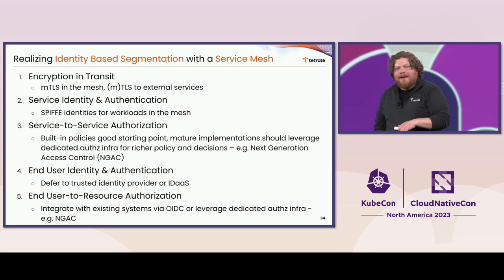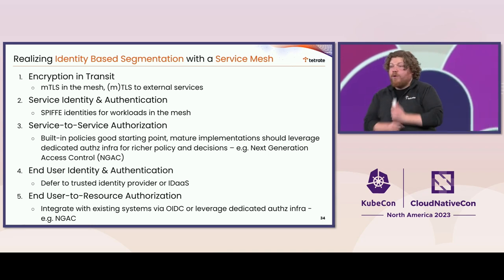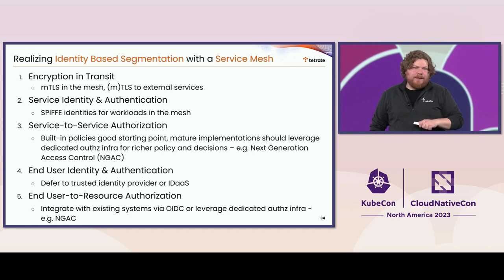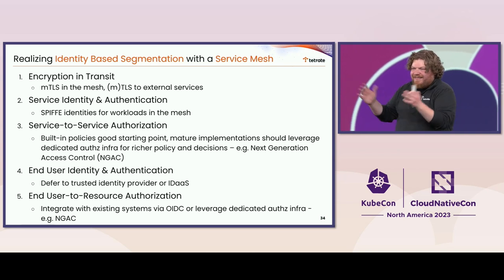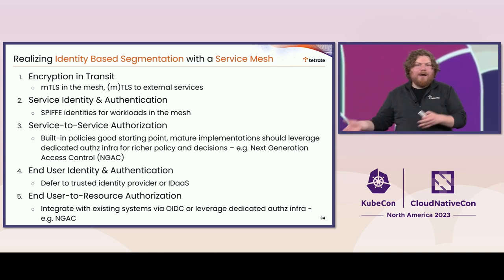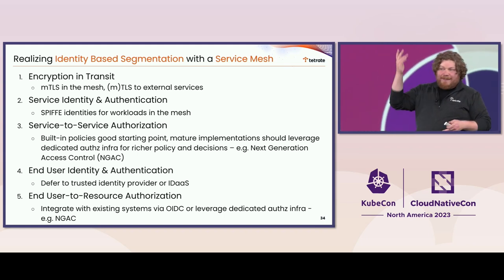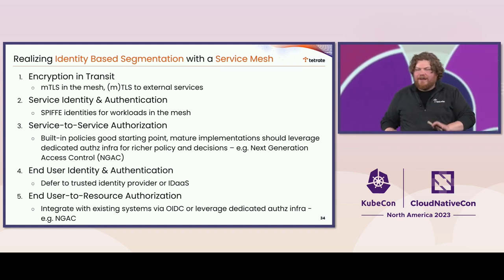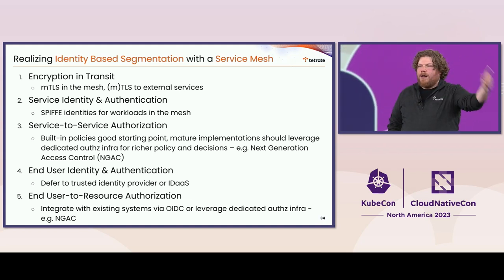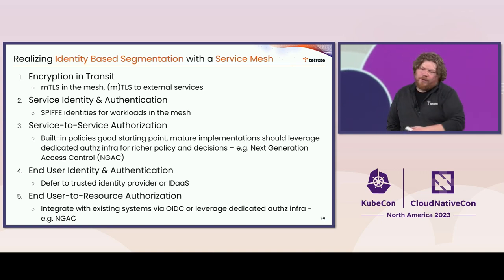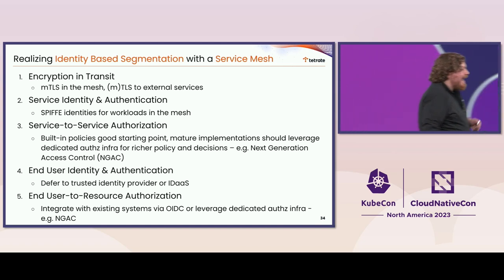We can use the service mesh to bound attacks in space and time: achieve runtime encryption, authenticate and authorize service-to-service communication. Looking back at our definition of identity-based segmentation — MTLS, service identity with things like Spiffe, service-to-service authorization with RBAC built into our system, or more sophisticated access control. And because the sidecar is a universal policy enforcement point, we can use it to enforce end-user authentication and authorization on behalf of our application. The service mesh won't authenticate your user directly, but we can guarantee every request goes to the OIDC server to be authenticated. Similarly, end-user-to-resource authorization isn't tractable to model in the service mesh with many users and many resources — instead, we use the service mesh as the policy enforcement point for our existing end-user authorization system. We talk a lot about that in SP 800-204A and B.